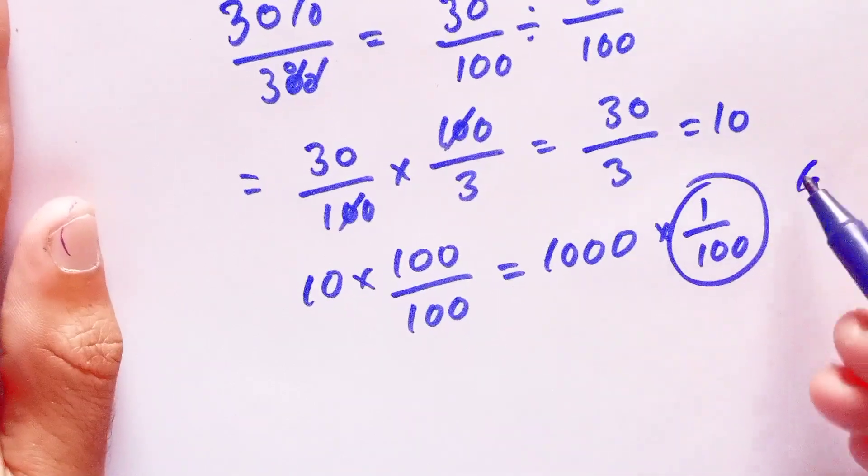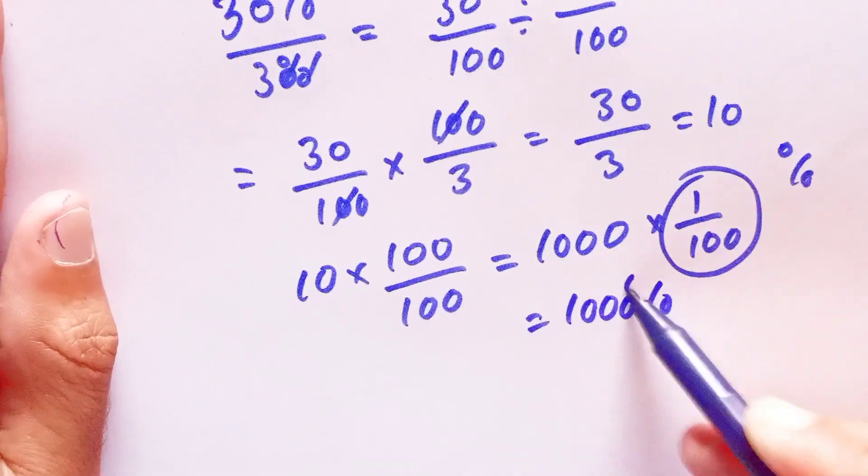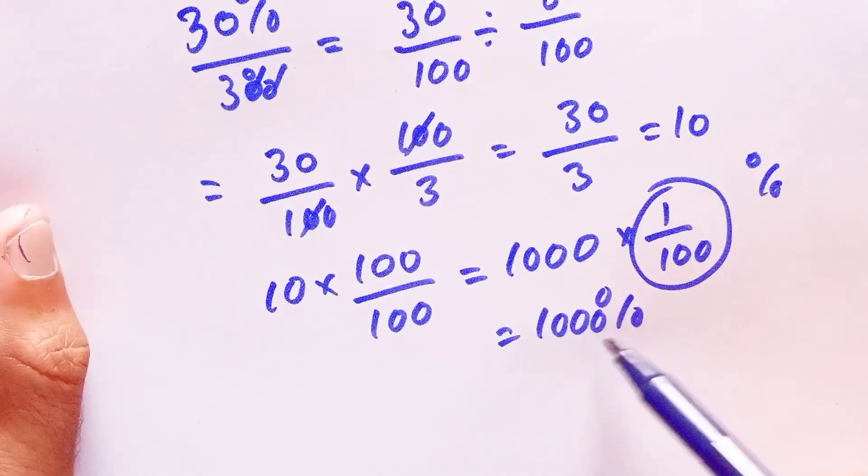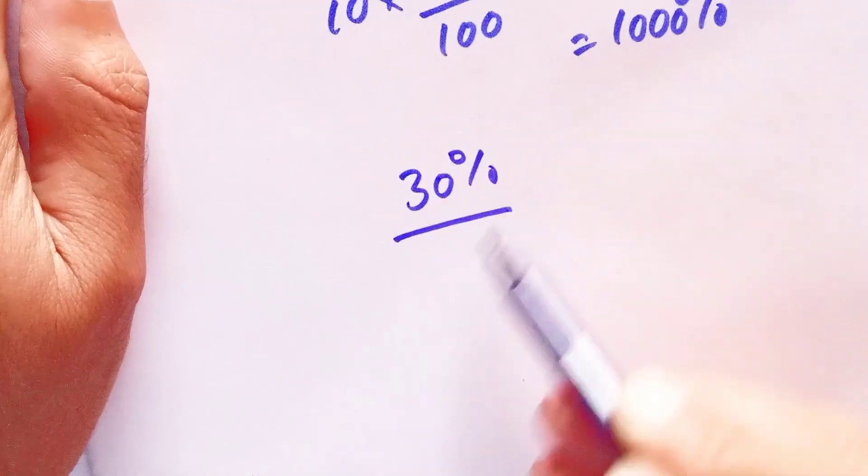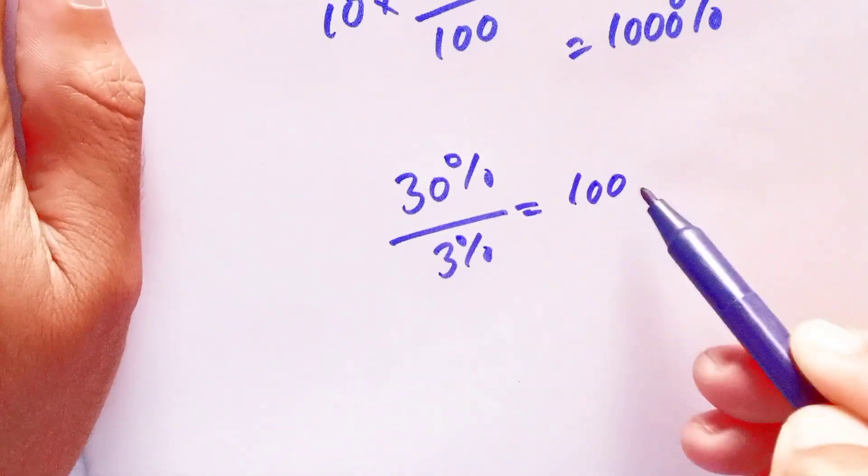1 over 100 can be written as percent, so it is equal to 1000 percent. When we divide 30% by 3%, we get the answer as 1000%. So 30% divided by 3% equals 1000%.